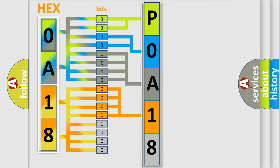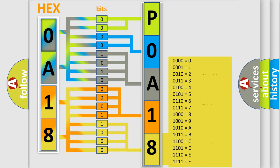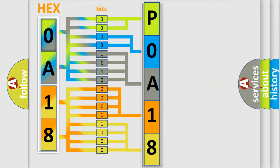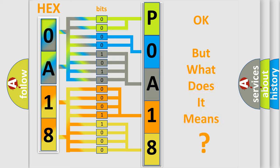A single byte conceals 256 possible combinations. We now know in what way the diagnostic tool translates the received information into a more comprehensible format. The number itself does not make sense to us if we cannot assign information about what it actually expresses.